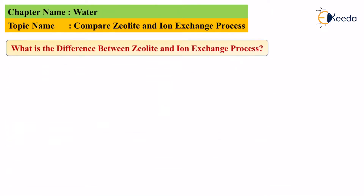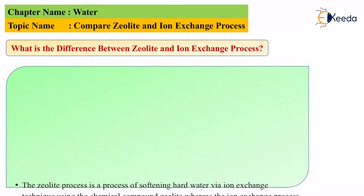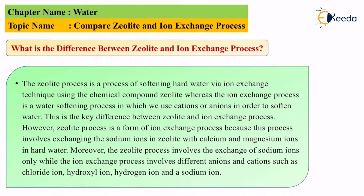Now, what is the difference between the zeolite and the ion exchange process? This is the very important part. The zeolite process is a process of softening hard water via ion exchange technique using the chemical compound zeolite, whereas the ion exchange process is a water softening technique where we use cations and anions. Remember: cations are positive ions and anions are negative ions.